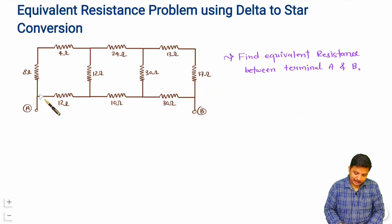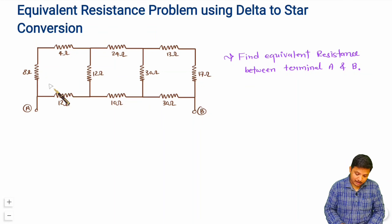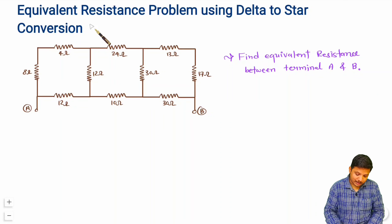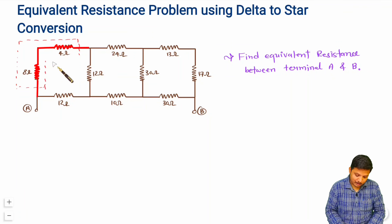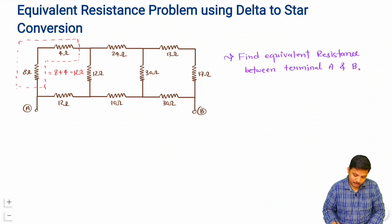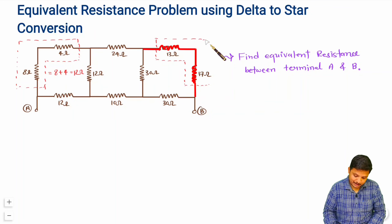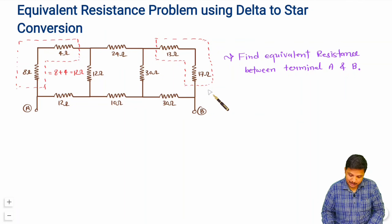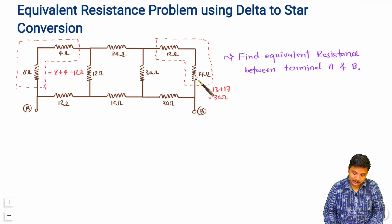Whenever you have any electrical network, first you will have to see what resistances are there in series and parallel. If you observe, these two resistances are there in series: equivalent resistance of 8 in series with 4 is 8 plus 4, which equals 12 ohm. And these two are also in series: 13 in series with 17 gives 13 plus 17, which is 30 ohm.